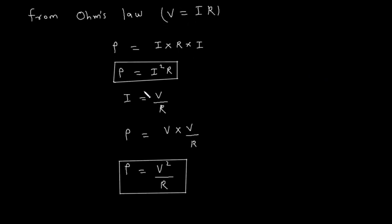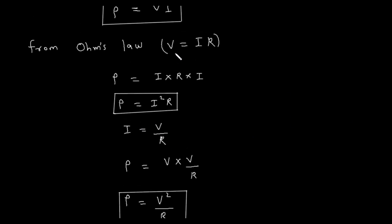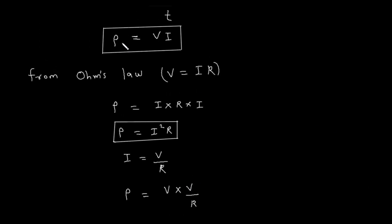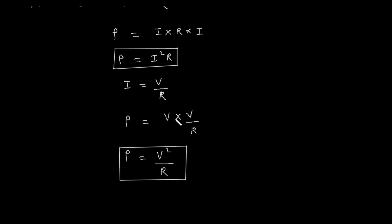Also according to Ohm's law, I is equal to V by R. If we take R to the other side so it will be in the denominator, giving I is equal to V upon R. Now power is equal to V into V by R. In place of current, if we substitute V by R, then we get this formula. Power is equal to V into V divided by R. This V into V is V square, so power is equal to V square upon R.